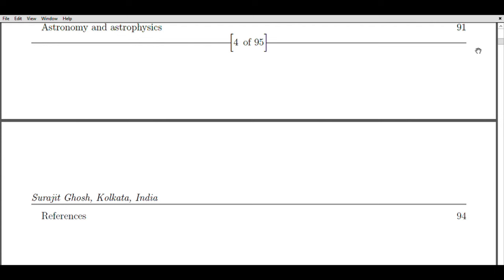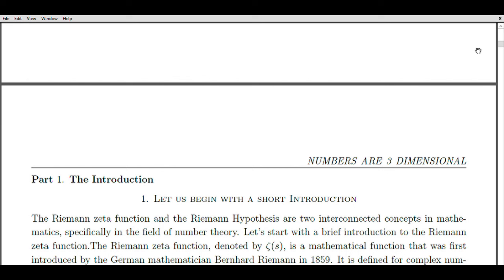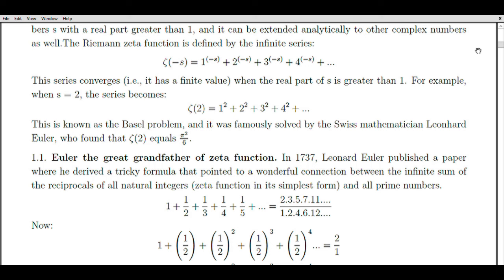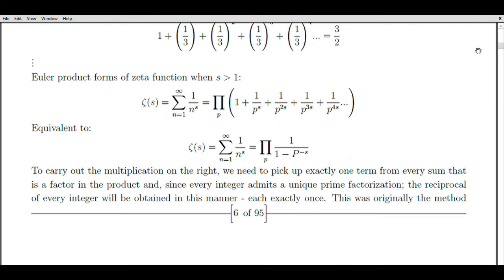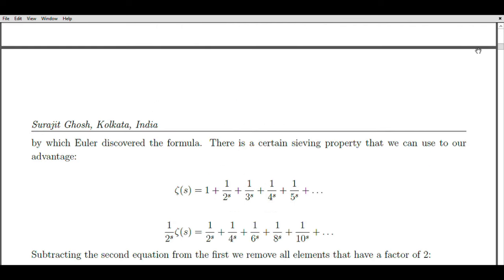To broaden the domain of the Riemann Zeta function, we employ a technique known as analytic continuation. This enables us to extend the definition to the entire complex plane, excluding the point s equals 1 where it possesses a simple pole. The Riemann Hypothesis asserts that all non-trivial zeros of the Zeta function reside on a critical line characterized by the equation real of s equals one half.